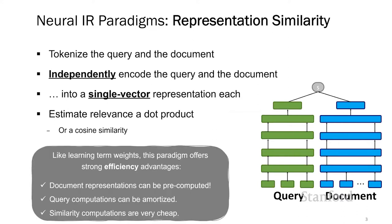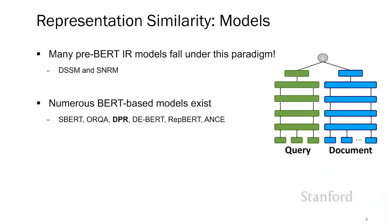This paradigm is very efficient for retrieval. Each document can be represented as a vector offline, and this pre-computed representation can be stored on disk before we even start conducting search. Moreover, the similarity computation between a query and a document is very cheap, as it's just a single dot product between two vectors. A very large number of IR models are representation similarity models, and many of those actually precede BERT, like DSSM and SNRM.